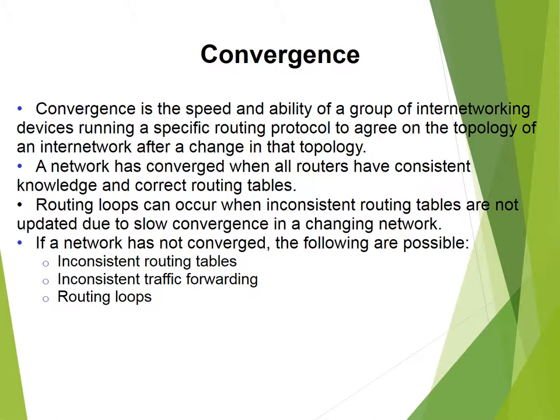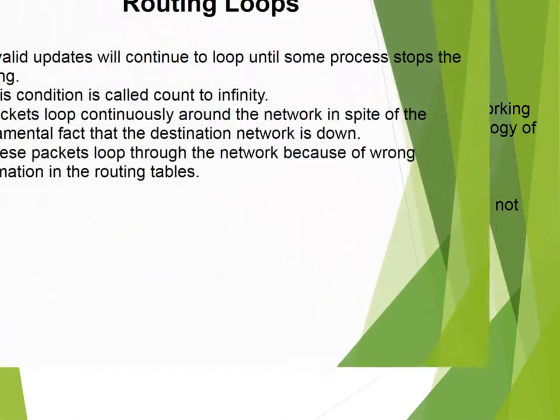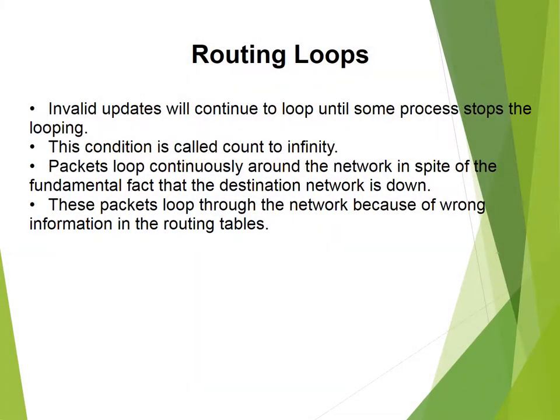When a network has not converged, the following problems are possible: inconsistent routing tables, inconsistent traffic forwarding, and routing loops. Invalid updates will continue to loop until some process stops the looping — this condition is called count to infinity. Packets loop continuously around the network despite the fact that the destination network is down, because of wrong information in the routing tables.